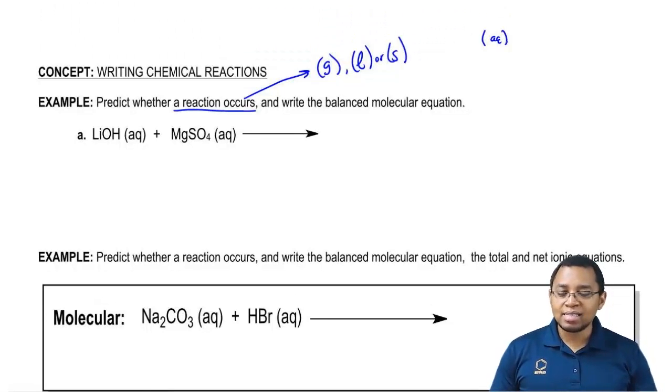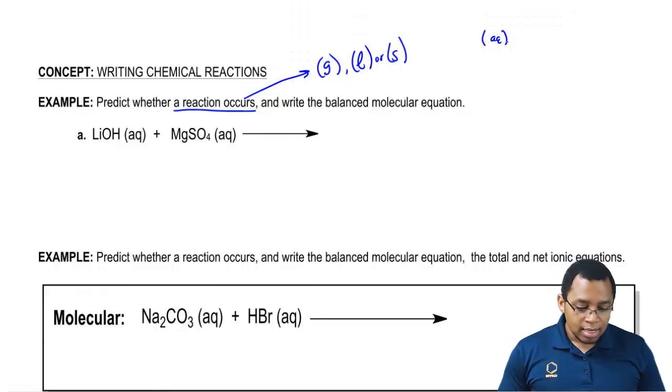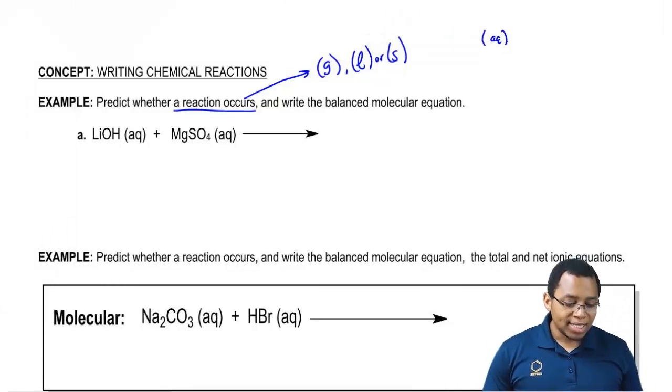So remember, you have to form a gas, a liquid, or a solid. Now let's take a look at this first equation here. Here we have lithium hydroxide aqueous, aqueous just means it's surrounded by water, plus magnesium sulfate aqueous. To do this, it's going to be important that you guys remember your solubility rules.